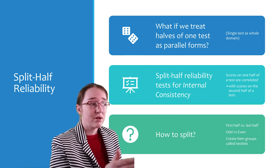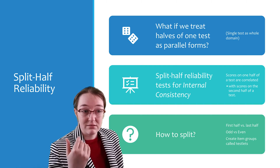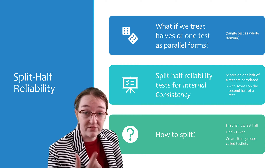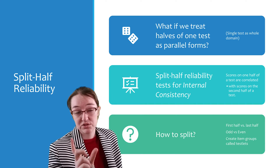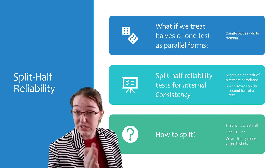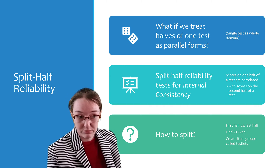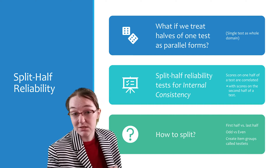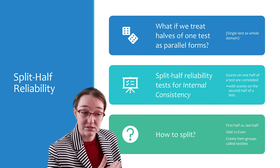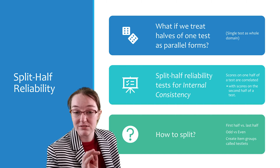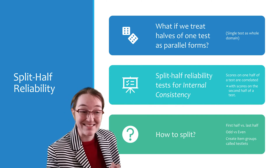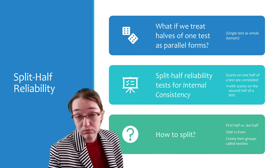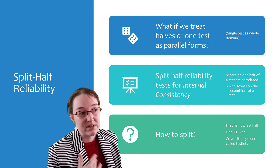So split-half reliability is estimated by obtaining the correlation of two pairs of scores obtained from equivalent halves of a single test administered at once. So it's useful, especially when it's impractical or undesirable to assess reliability at two testing points, or to administer a test once, because of all those factors related to timing or expense. And the computation is pretty straightforward, and we'll walk through the big three steps.